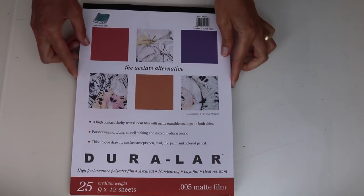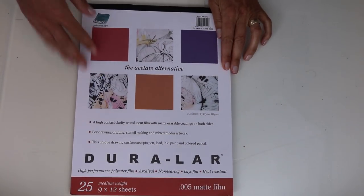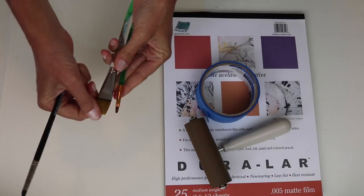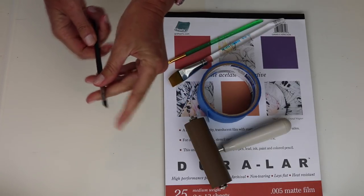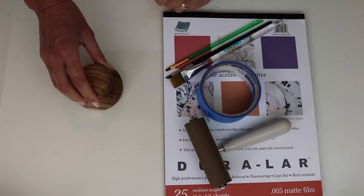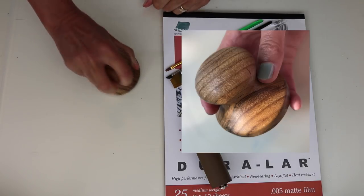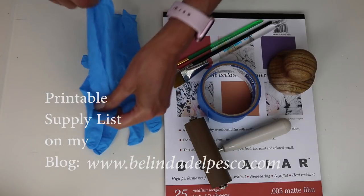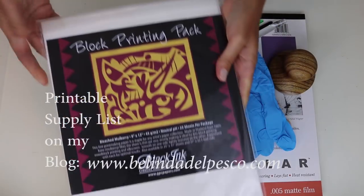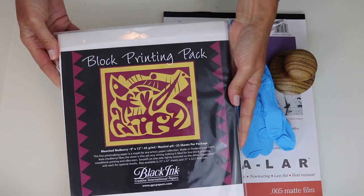This is duralar polyester film. We're going to use this as a printmaking plate. Masking tape and a brayer. That one is optional. Definitely need some brushes and this is a sculpting tool which has a rubber tip, and that is a wooden baron. You can also use a spoon instead. And then some rubber gloves and some printmaking paper.